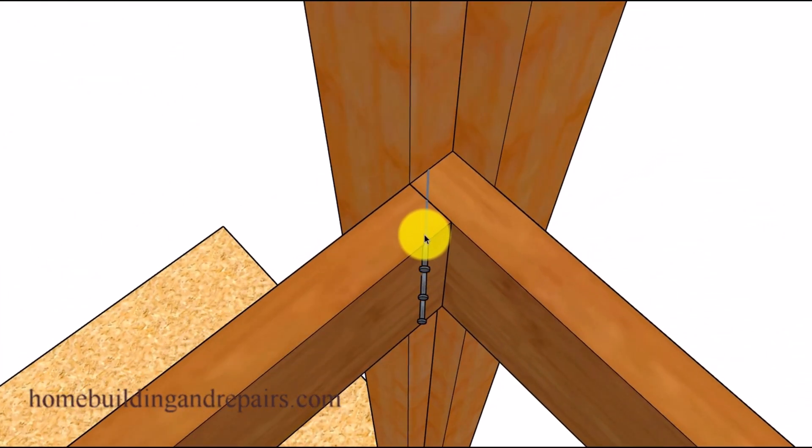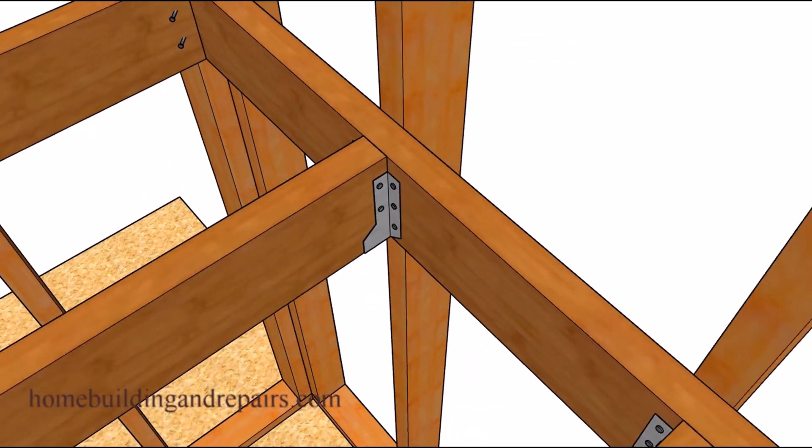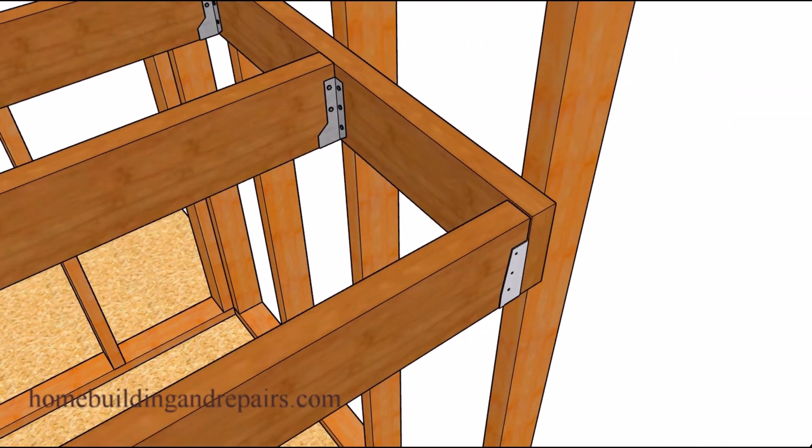where the angled nail can go through the joist and then through the other joist and then into the wall framing stud. And of course, if you are using a nailing gun, that's going to be quite easy to do.